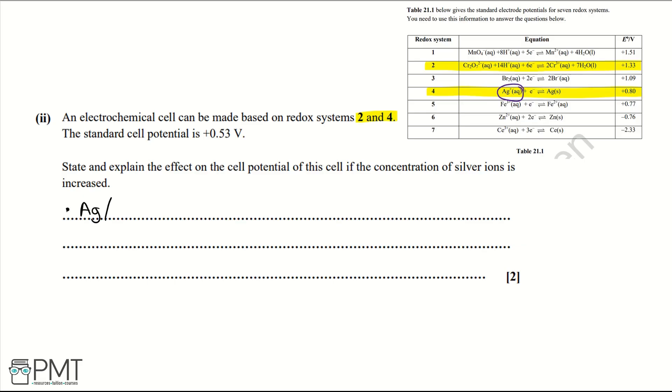We can then write our two bullet points. Our first one is going to be that redox system 4, or the silver/silver ion redox system, is going to become more positive. And this is going to mean that the electrode potential of the cell is going to become less positive, so the combined redox system 2 and 4 electrode potential. To get the two marks for this question you get a mark for each of the bullet points that I've written.